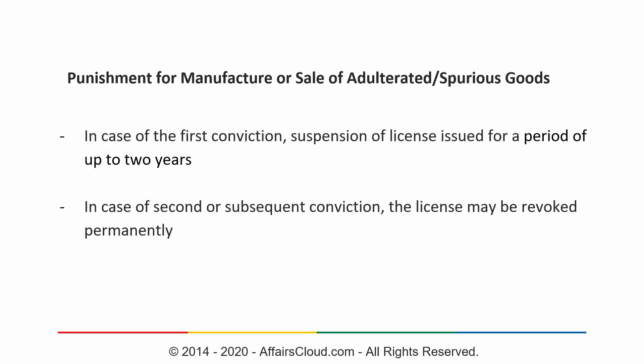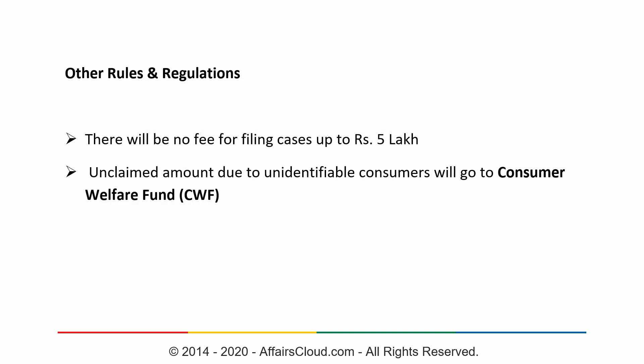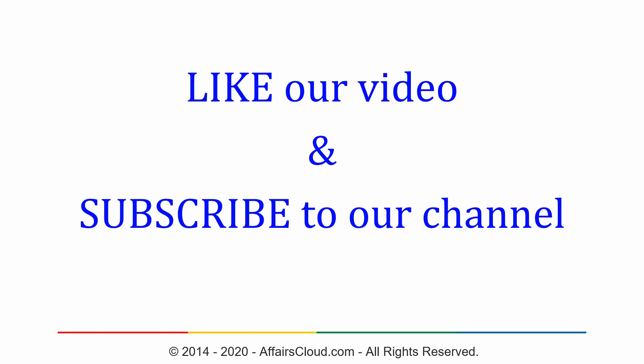Taking a brief look at penalty provisions: if a person has been convicted for selling adulterated or spurious goods, on the first conviction the license shall be revoked for a maximum period of two years, and on second or subsequent convictions the license may be revoked permanently. Additionally, the new act states that there shall be no fees charged for filing cases of monetary value up to rupees five lakhs, and any unclaimed amount due to unidentifiable consumers will go to the Consumer Welfare Fund. Hope you liked our video — please leave your feedback in the comments and remember to subscribe to our channel. Thank you.